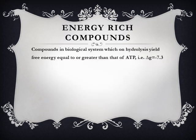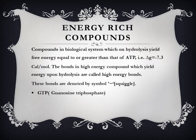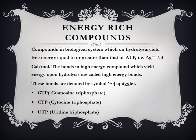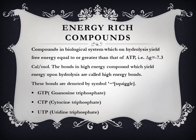The next slide is about energy-rich compounds. These are compounds in biological systems which on hydrolysis yield free energy equal to or greater than that of ATP. The amount of energy yielded by energy-rich compounds on hydrolysis is −7.3 calories per mole. The bonds in high-energy compounds that yield energy upon hydrolysis are called high-energy bonds, denoted by the squiggle symbol. Examples listed include GTP (guanosine triphosphate), CTP (cytosine triphosphate), and UTP (uridine triphosphate).